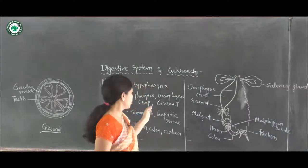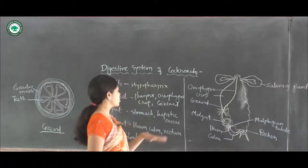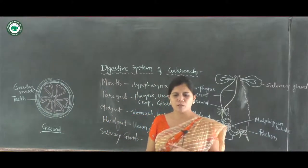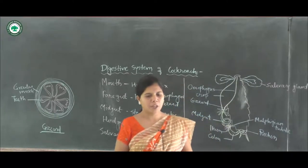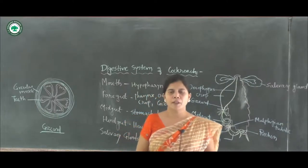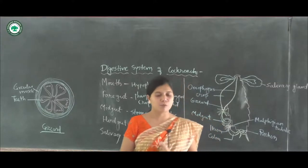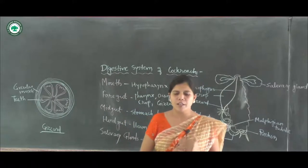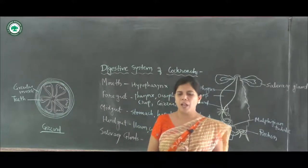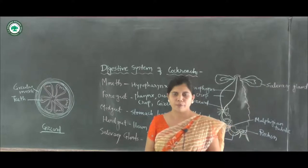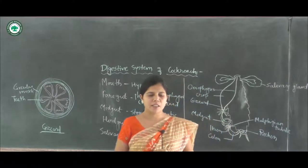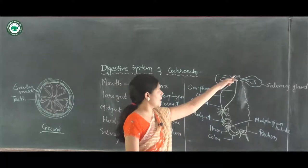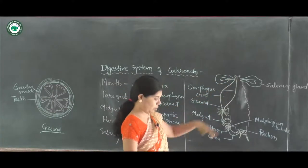The foregut is the first division of the alimentary canal of the cockroach. It consists of the pharynx, oesophagus, crop, and gizzard. The pharynx is a very short, narrow but muscular tube. It contains taste sensilla and leads into the oesophagus.